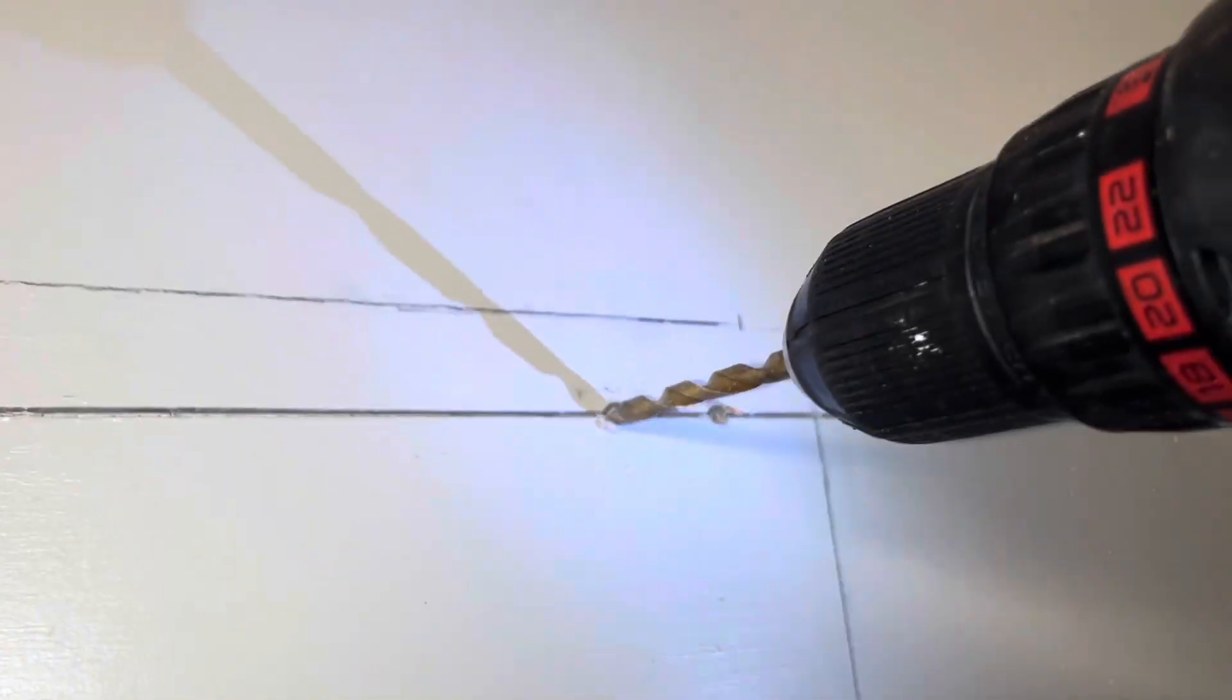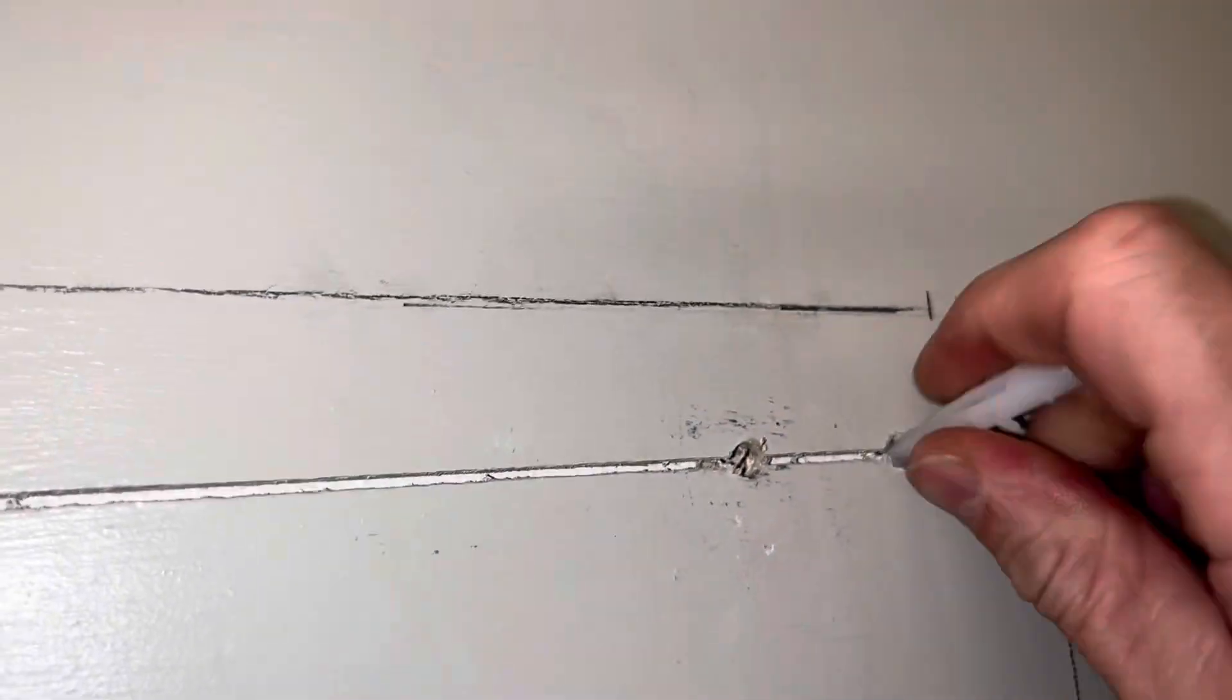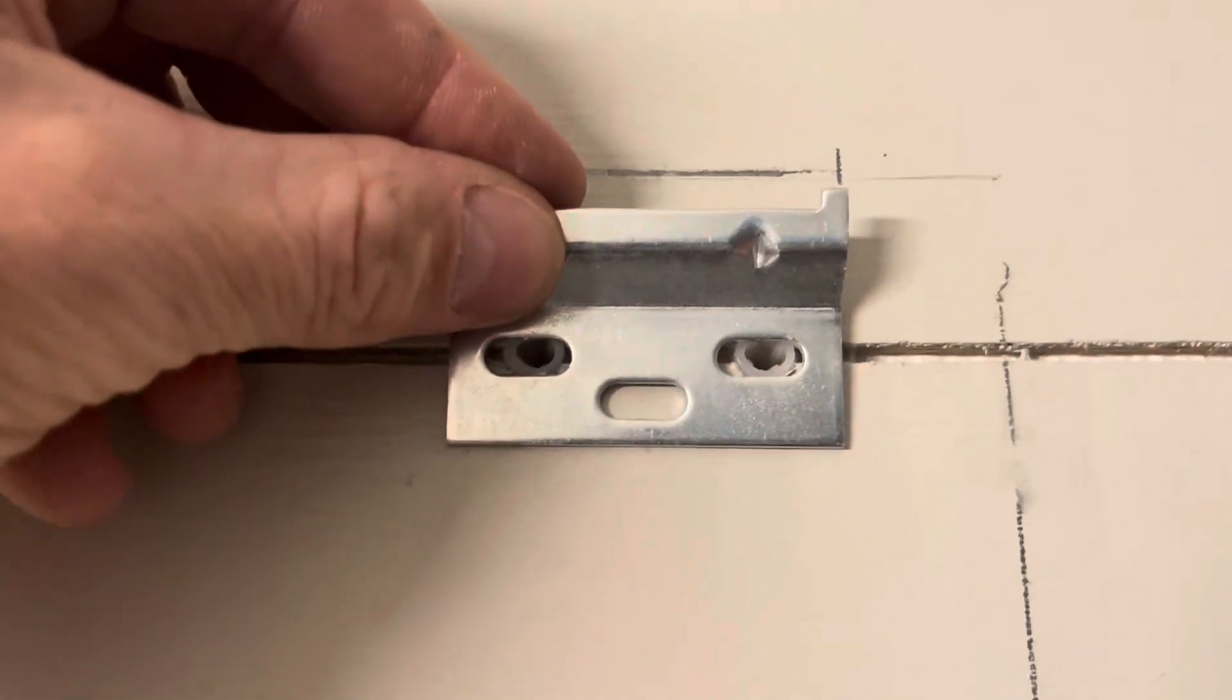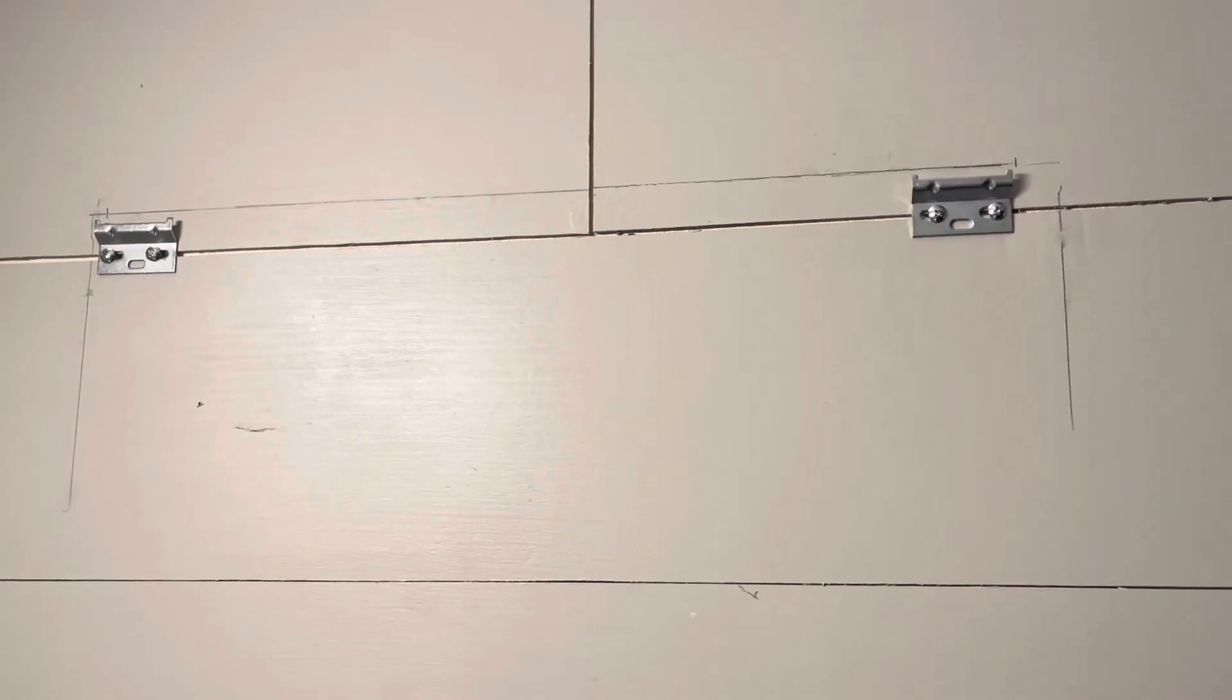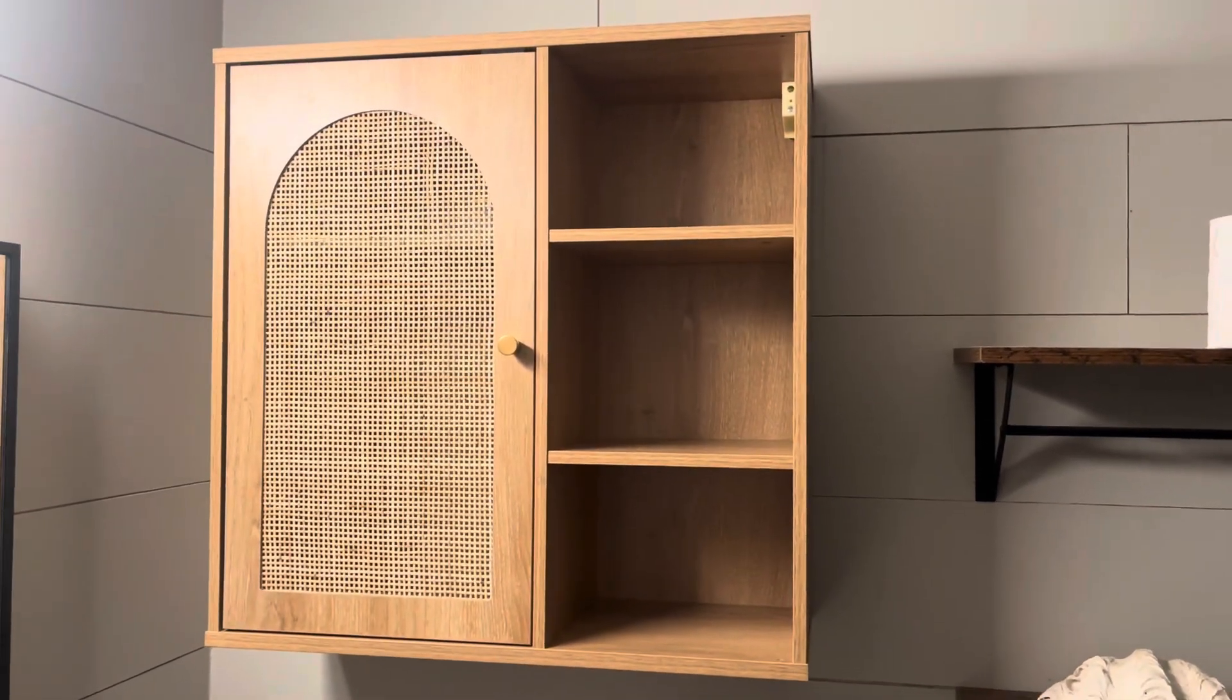Now we're getting ready to mount it to the wall. So I've actually held the thing up on the wall and drew a line across the top. I threw a level on the top as well. That allowed me to drill my fasteners correctly. Here it is mounted.